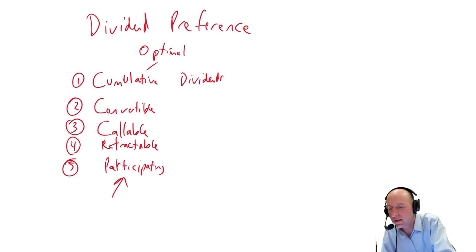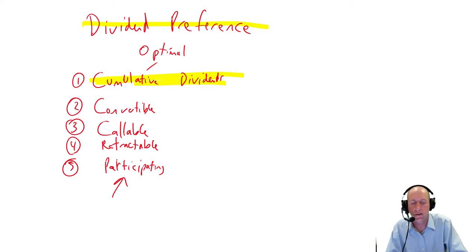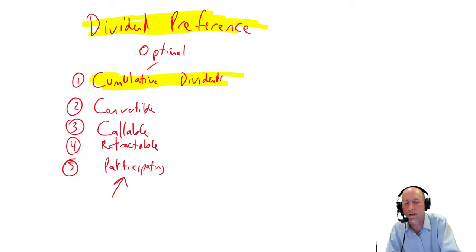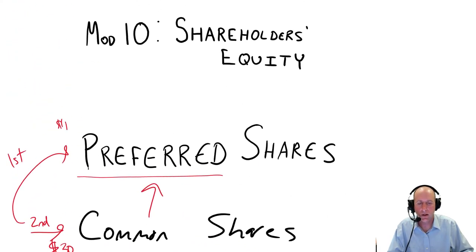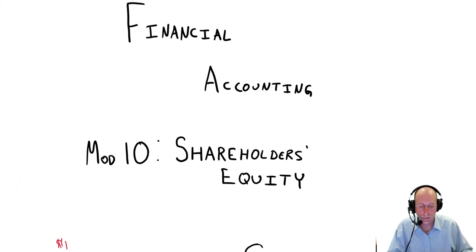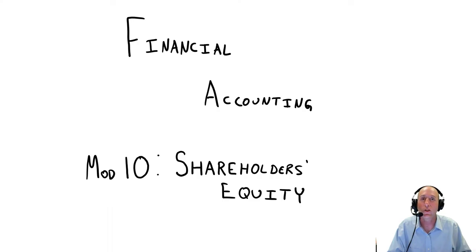Our class is going to focus in on this. We're going to focus in on the dividend preference, the fact that the dividends are cumulative to preferred shareholders. Those are really going to be the features we focus in on. But if you take an intermediate or advanced accounting class, you could expect to explore a lot of these other items. Okay, so I can't wait to get to some problems in shareholders' equity. And you'll see preferred shares all over those problems. All right, that's all for this video. Stay tuned for the next one.